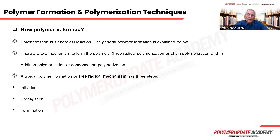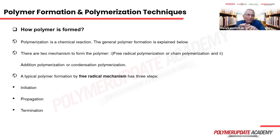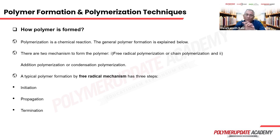Let us look at how the polymer is formed. Polymerization is a chemical reaction. There are two different mechanisms by which polymers are formed: one is free radical polymerization and another is chain polymerization or addition polymerization. A typical polymer formation by the free radical mechanism is explained first.